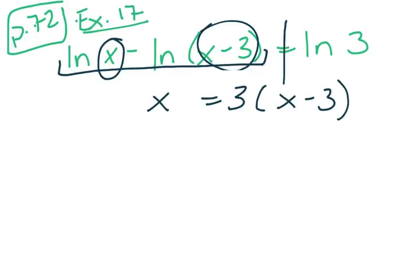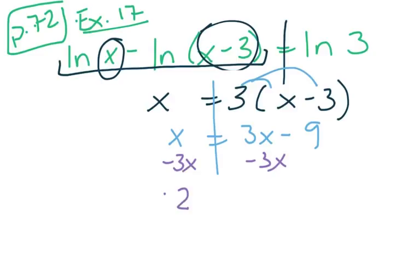So this is where we left off, and now we need to solve this problem. Over here we'll distribute, and we get 3x minus 9. I'm going to move the 3x to the left. So I get negative 2x equals negative 9. Divide both sides by negative 2, and then x equals 9 halves.